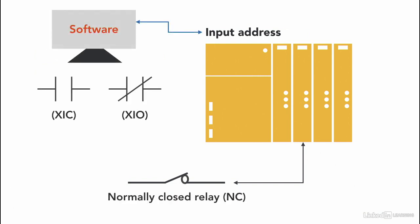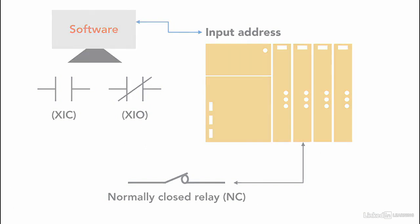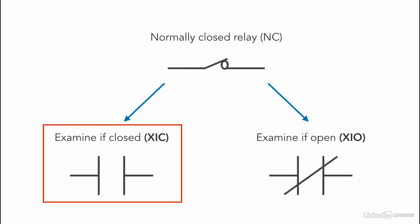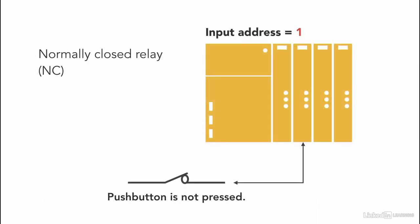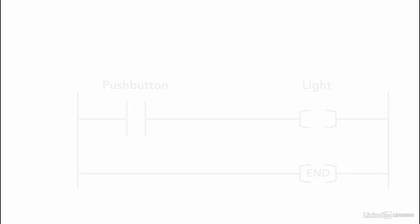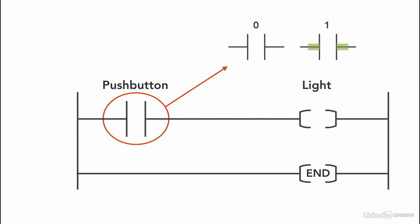Let's see what happens in the program when using two different instructions. Using XIC — remember, the XIC instruction is activated when the memory location is 1. So if the push button is not pressed, the memory location is 1 because it's a normally closed push button. Current is flowing, the XIC instruction will be highlighted, and the light will turn on without pressing the push button. Once the push button is pressed, the memory location is 0, and XIC is not activated anymore — it works the opposite way as a normally open contact.